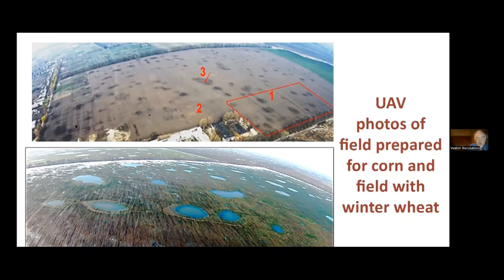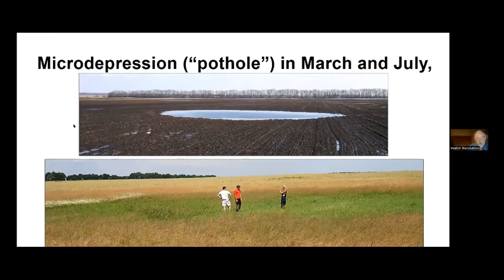Such a picture was observed from one to four weeks. That is why we started to watch one such large temporary lake from spring till autumn. After four weeks of inundation, all plants of wheat had died by autumn.